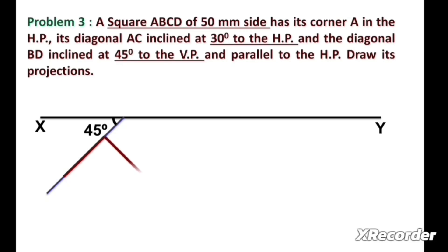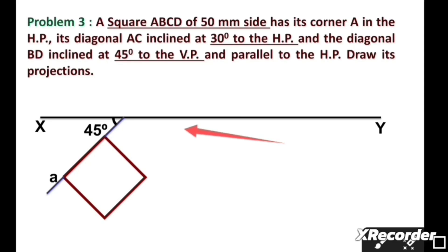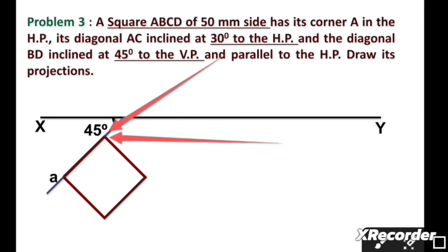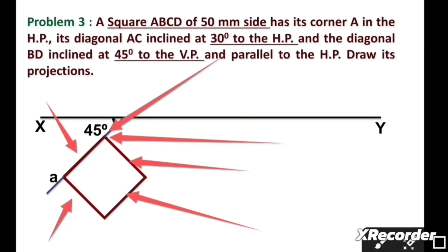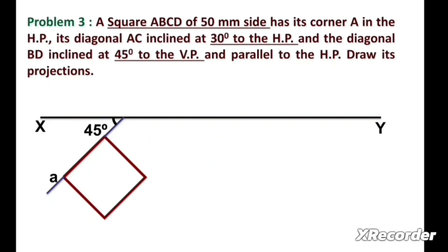Now we draw the square having side length 50mm. First, we mark a point anywhere on this inclined line and consider a length of 5cm. Then we draw two perpendicular lines each having 5cm length. We join the endpoints of these lines to get a square with side length 50mm. We then mark the corners as points A, B, C, and D as shown in the figure.